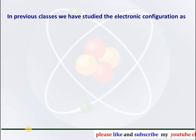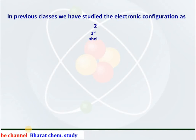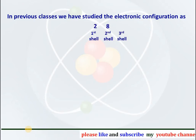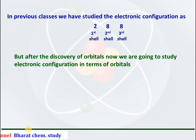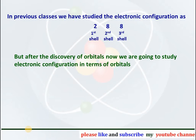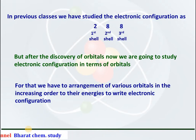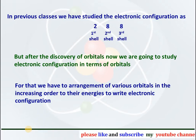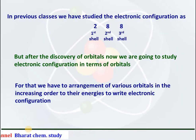In previous classes we studied the electronic configuration as 2 electrons in the first shell, 8 electrons in the second shell and 8 electrons in the third shell. But after the discovery of orbitals and subshells, now we are going to study the electronic configuration in terms of subshells and orbitals. For that we have to arrange the various orbitals and subshells in increasing order of their energies.